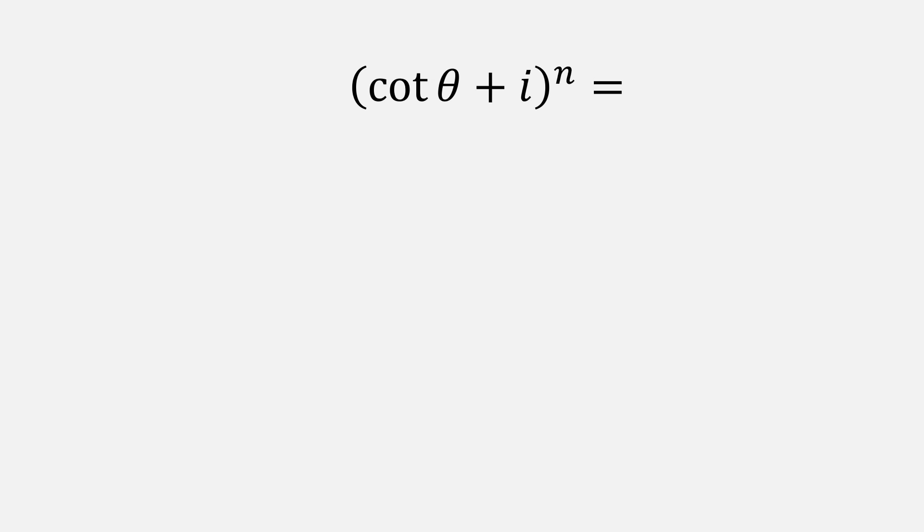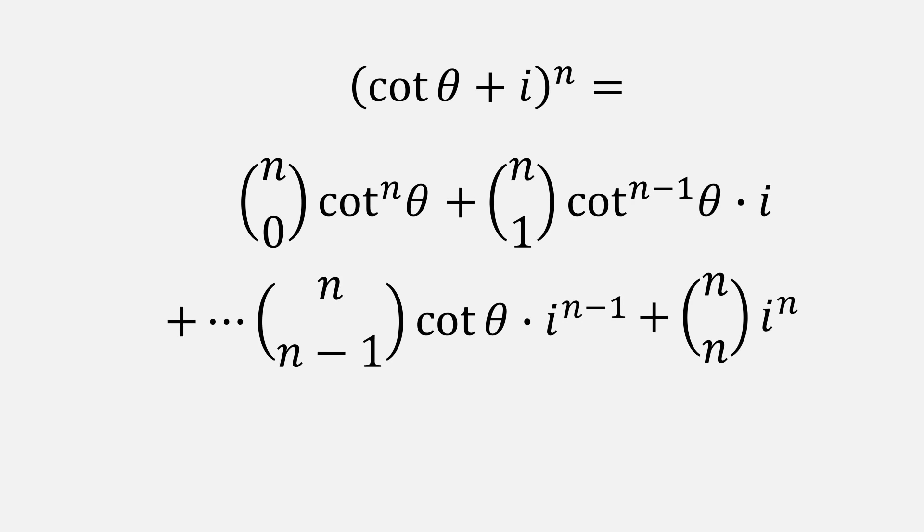Now Cauchy applies the binomial theorem. I'll just show the first two and the last two terms. The expressions in parentheses are the binomial coefficients, n choose 0, n choose 1, and so on. Notice that the imaginary number i is being raised to increasing integer exponents, so some terms will be imaginary and others will be real.